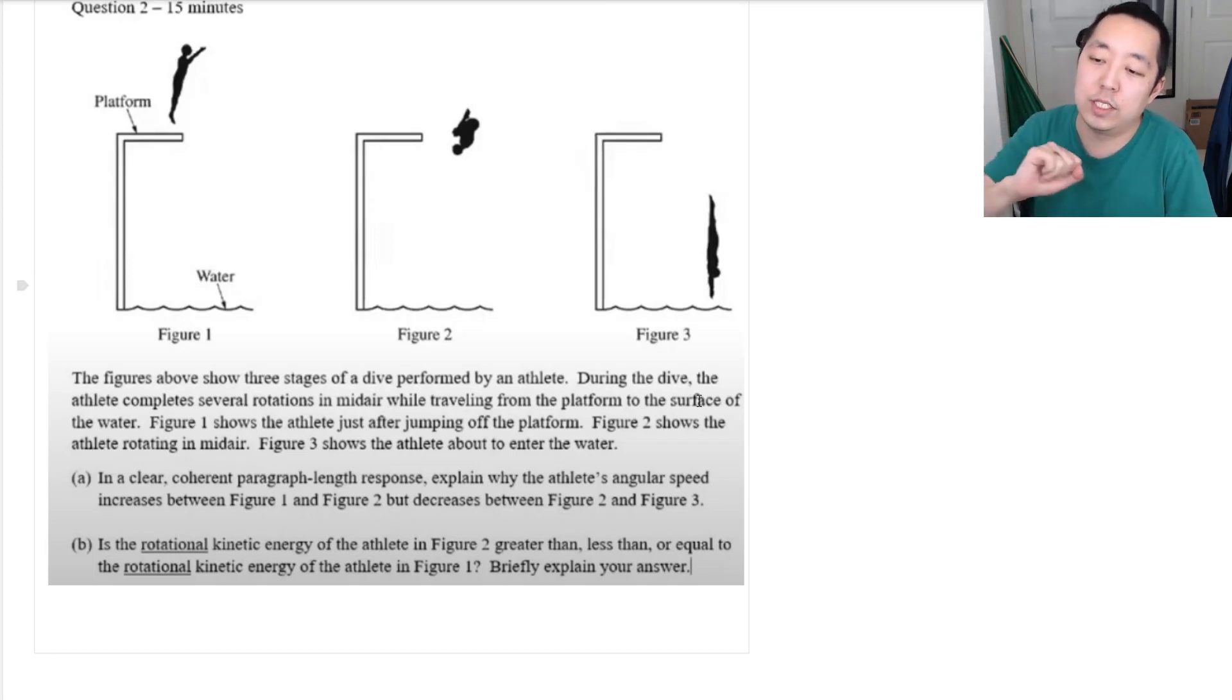But here, the figures above show three stages of a dive performed by an athlete. During the dive, the athlete completes several rotations mid-air while traveling from the platform to the surface of the water. Figure 1 shows the athlete just after jumping off the platform.